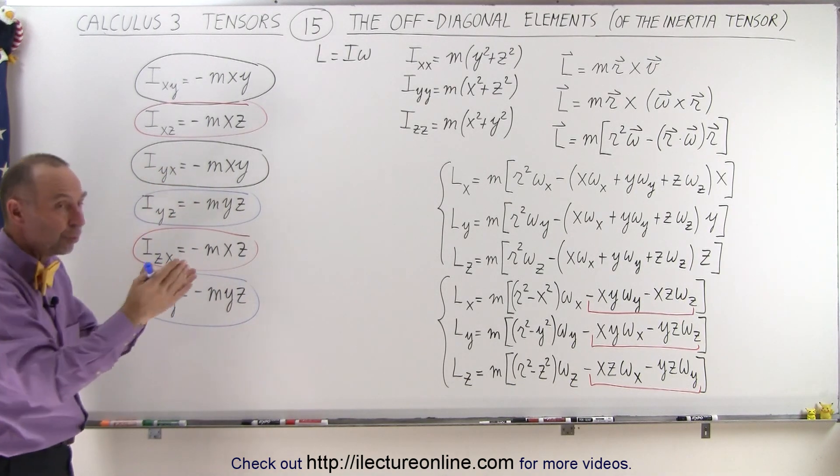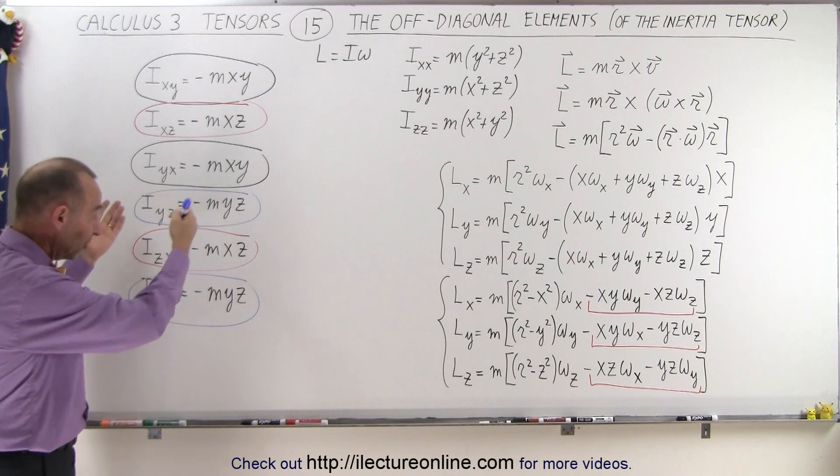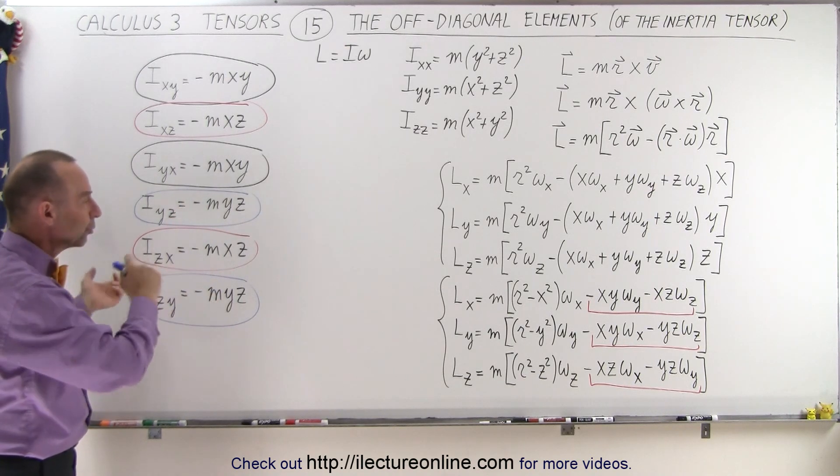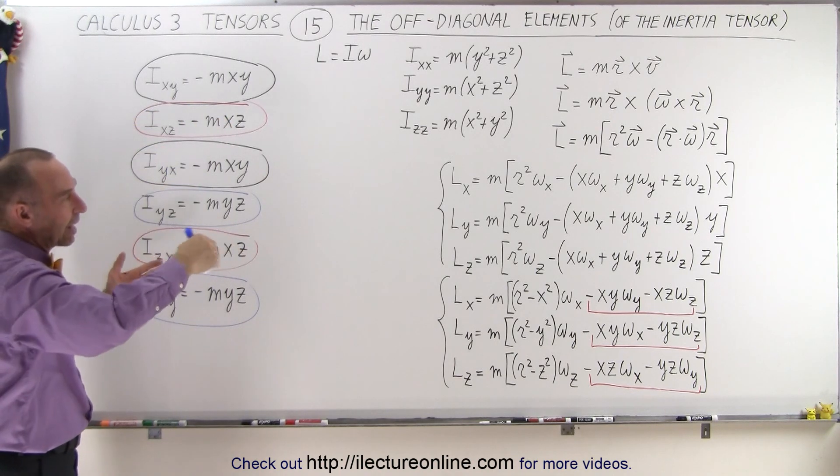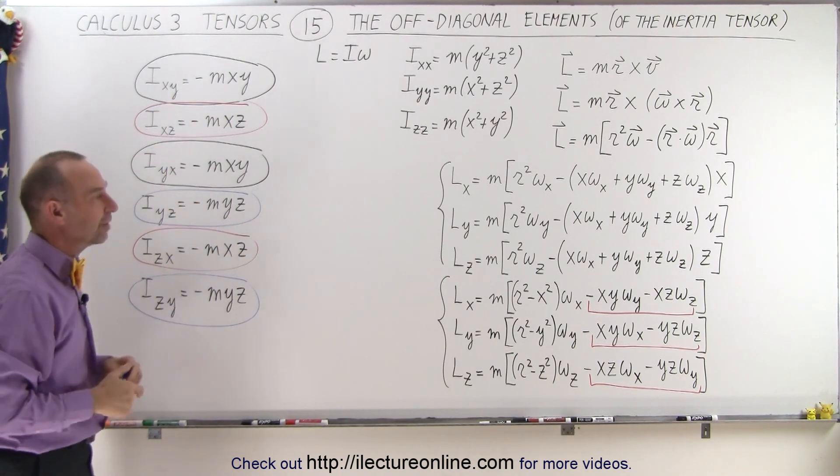Because the off-diagonal terms are very often, in this case, obviously equal to one another. The ones that are basically the same distance away from each other across the diagonal. On either side of the diagonal, they're going to be the same.